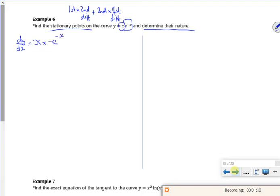Plus second bit, e to the minus x, times first bit differentiated is 1. So dy by dx is minus x e to the minus x plus e to the minus x. I know it's stationary, so that's done for differentiating.